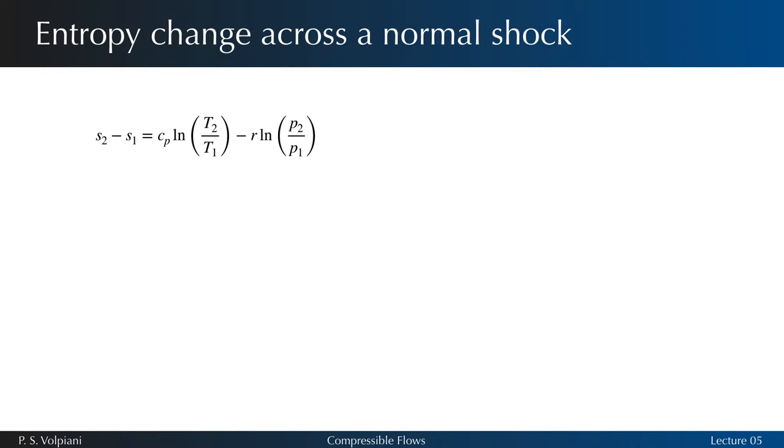Since a stagnation state has the same specific entropy as its static state before and after the shock, S01 equals S1 and S02 equals S2. The expression for entropy changes can be written between the upstream and downstream stagnation states as follows.